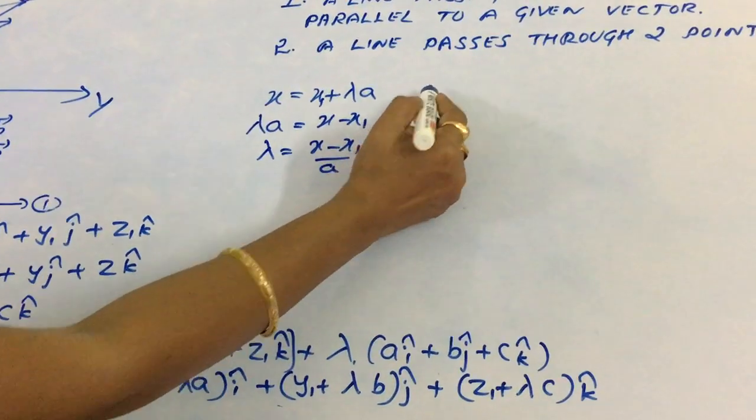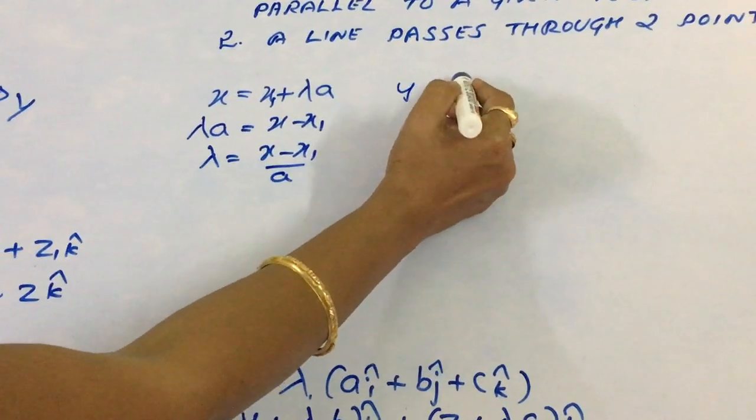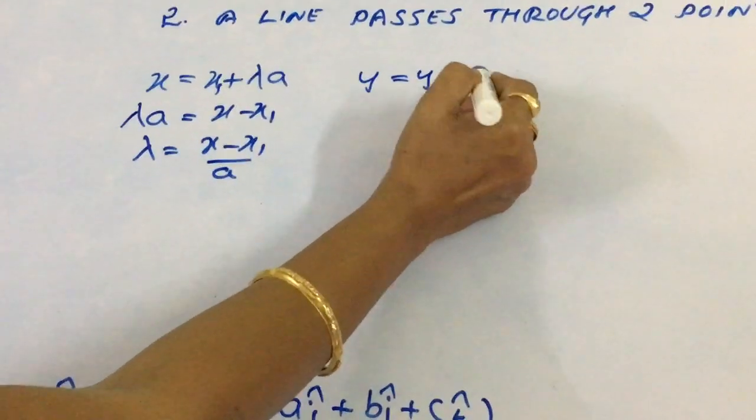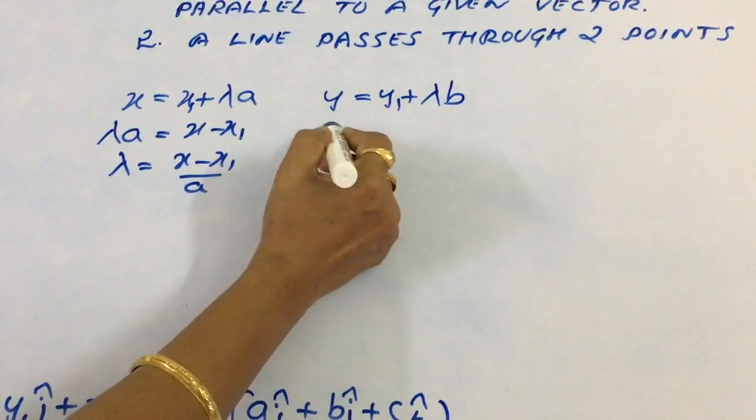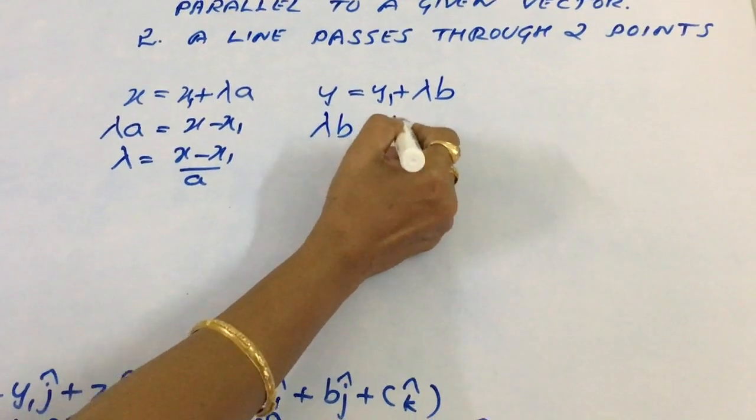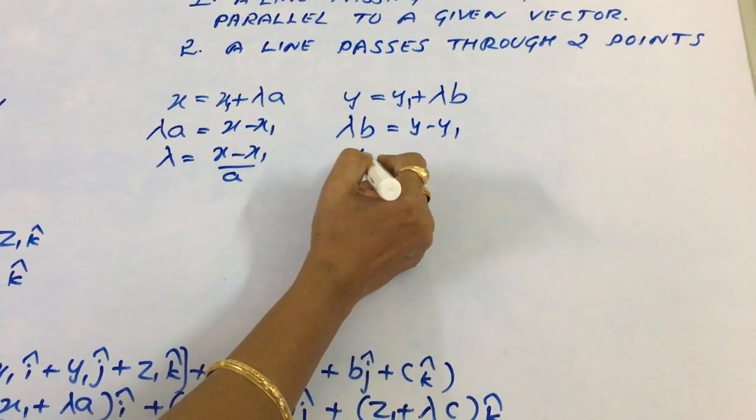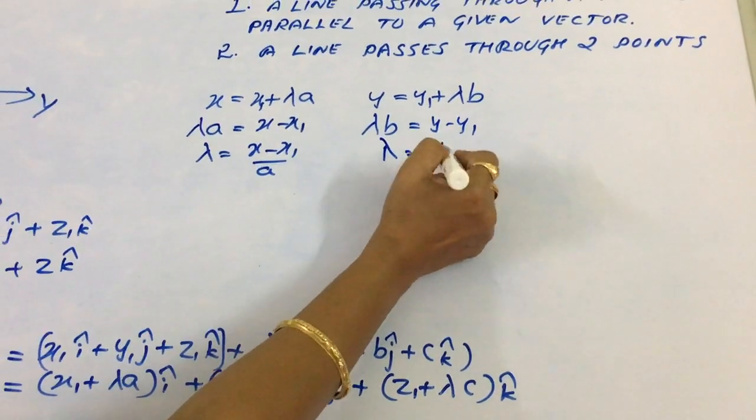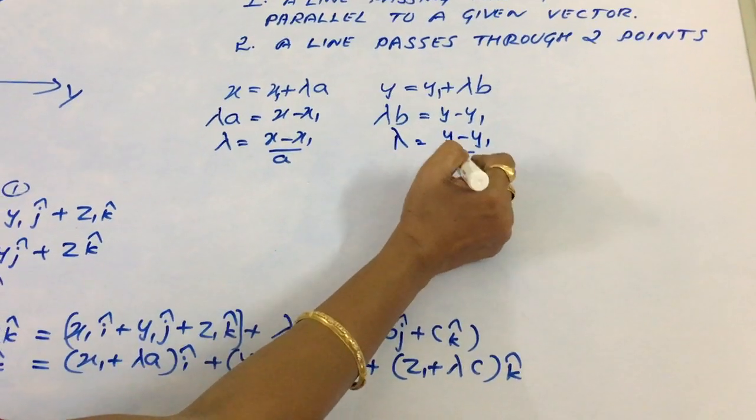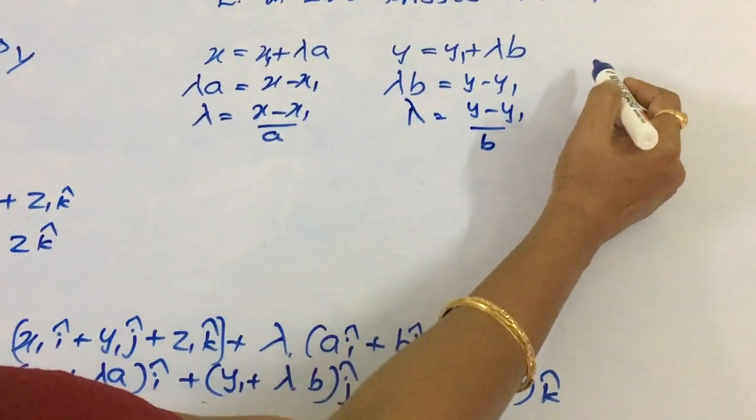Similarly, y equals y1 plus lambda B. So lambda B equals y minus y1. Lambda equals (y minus y1) by B.